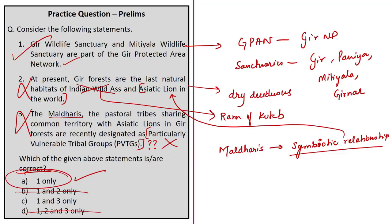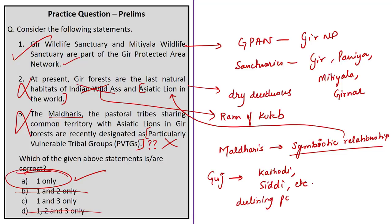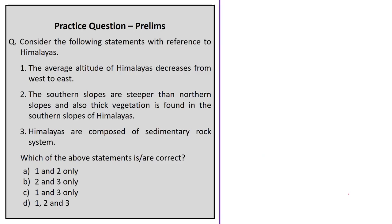In Gujarat, tribes designated as PVTGs include the Katkari, Kotwalia, Padhar, Siddhi, and Kolcha tribes. The criteria for designating tribes as PVTGs are: a pre-agricultural level of technology, a stagnant or declining population, extremely low literacy, and a subsistence level of economy.